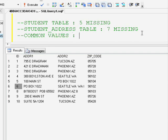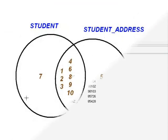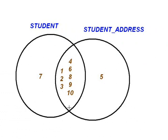In the student table I have IDs 1, 2, 3, 4, 6, 7, 8, 9, and 10 — ID 5 is not there. In the student address table, except for ID 7, all remaining IDs are present. So the common IDs in these two tables are 1, 2, 3, 4, 6, 8, 9, and 10. With these two tables we will see each type of join.